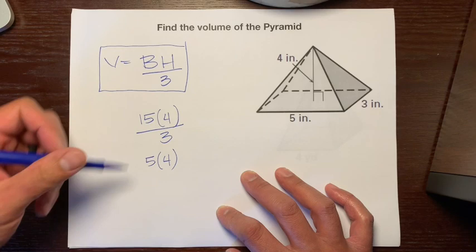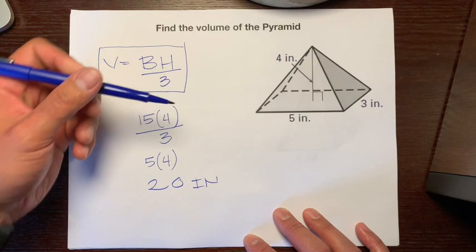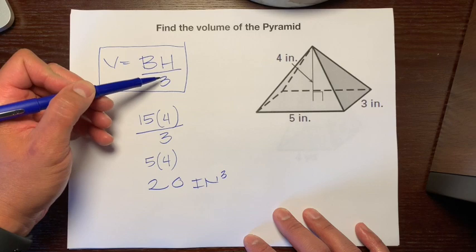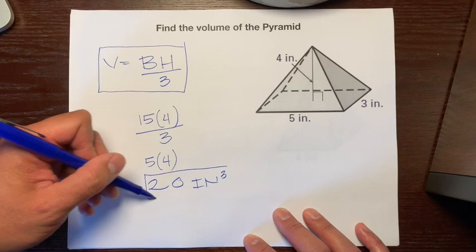And so five times four is 20 inches. And because it's volume, cubed. So there's that three again. So we divide by three, because that's the same number that represents cubes. So 20 inches cubed.